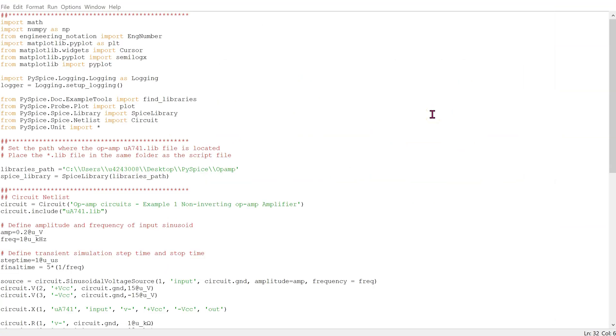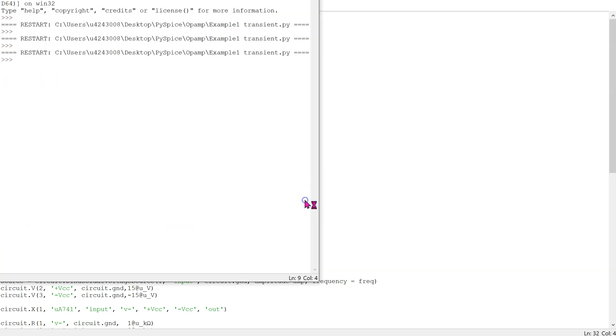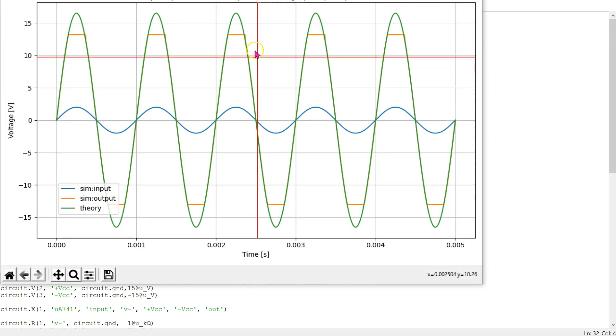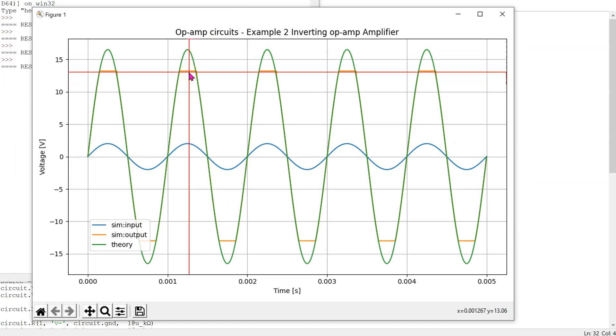We can use the transient simulation to investigate practical limits of an op-amp. For instance, in this case, if we increase the input voltage to a 2-volt peak sine wave and we run this code again, we can see that now the output voltage saturates at approximately plus minus 13 volts. This is to be expected since a practical op-amp can only produce output voltage which is 1 to 2 volts less than the supply voltages.